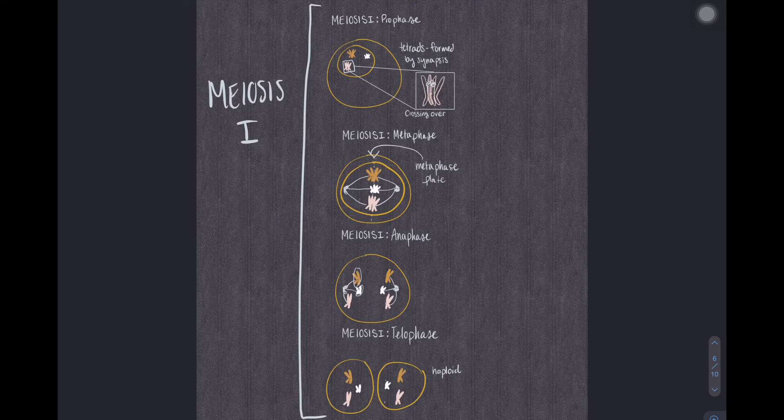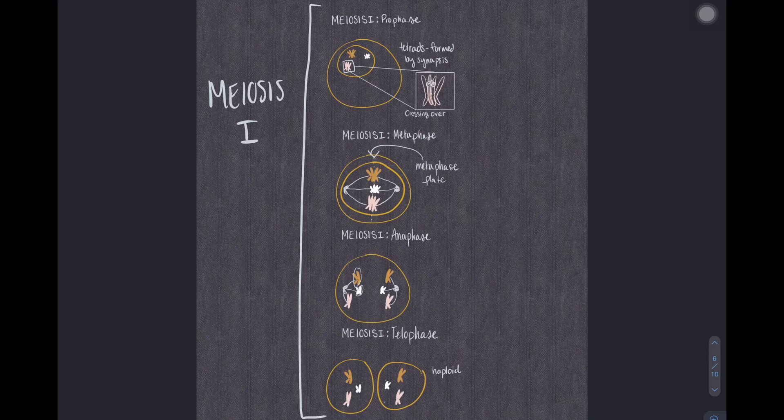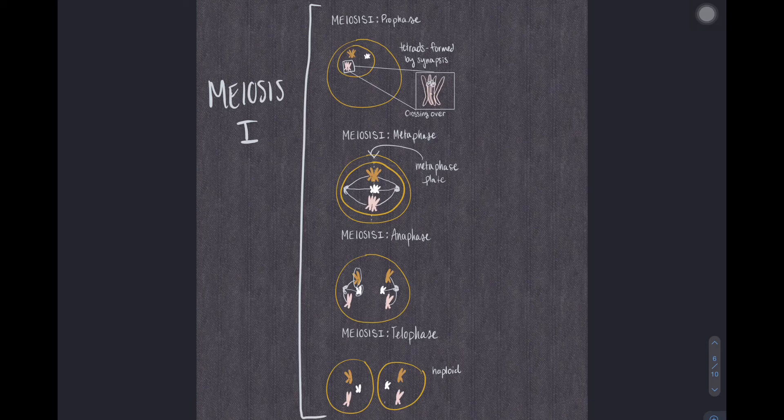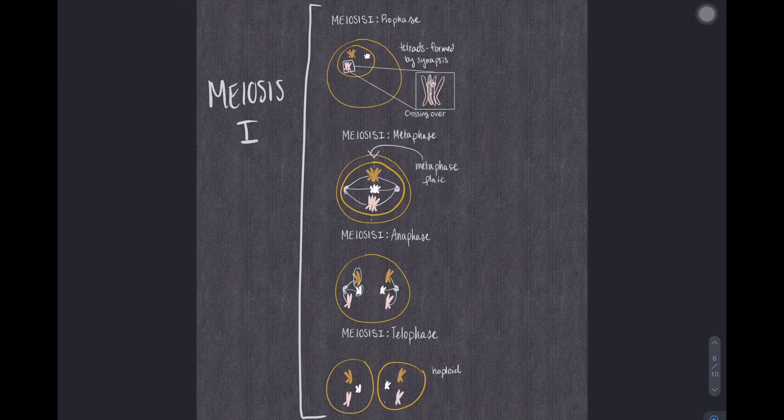Prophase is where homologous chromosomes form tetrads. Crossing over occurs. Metaphase I is where tetrads meet at the metaphase plate. Anaphase I is where homologous chromosomes separate. Telophase I is where the cell divides, producing two haploid cells.